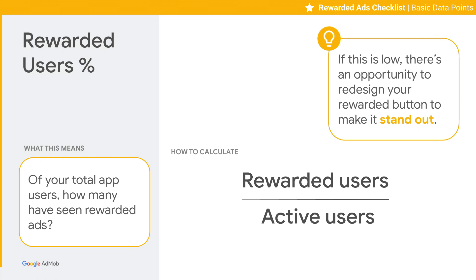The second basic data point is Rewarded Users Percentage. To calculate it, simply divide Rewarded Users over Active Users. This metric tells you, of your total users, how many have seen Rewarded Ads. If this metric is low and below your goal, it means few users have seen Rewarded Ads. To improve this metric, consider redesigning your Rewarded button to make it stand out.